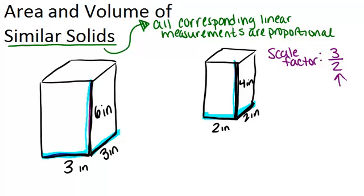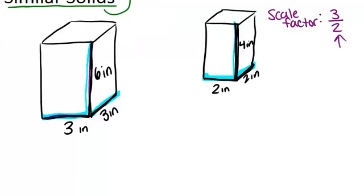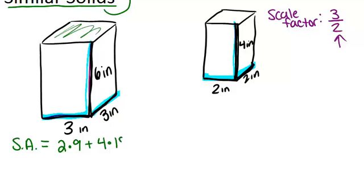So remember when you're figuring out surface area, what you need to do is find the area of all the faces and add them up. For the surface area of the prism on the left, notice that the base is a square, which has an area of 9, meaning the top base also has an area of 9. And going all the way around, we have 4 congruent rectangles which each have an area of 18, because it's 3 times 6. So the total surface area will be 2 times 9 for the two squares, plus 4 times 18 for the four rectangles. That gives us a surface area of 90 inches squared.